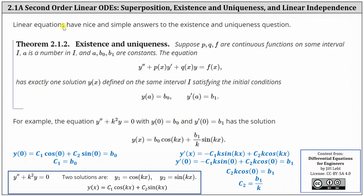In addition, linear equations have nice and simple answers to the existence and uniqueness question. This brings us to theorem 2.1.2. Suppose p, q, and f are continuous functions on some interval I; a is a number in the interval I; and a, b₀, and b₁ are constants. Then the equation y'' + p(x)·y' + q(x)·y = f(x) has exactly one solution y(x) defined on the same interval I, satisfying the initial conditions y(a) = b₀ and y'(a) = b₁.